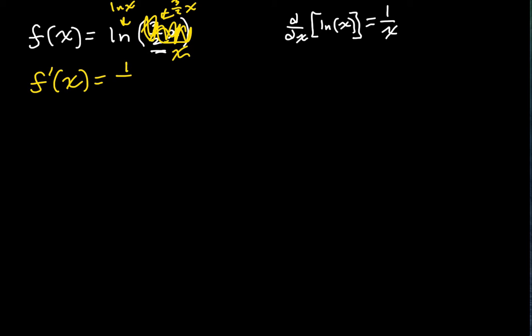So we have 1 over x, except wait, we can't just fully ignore that, right? Because this is still, and it's good to keep the 1 half over there, 1 over, not x, but we have to do the inner function, 3 halves times x, right?